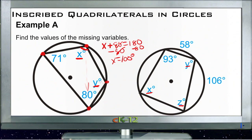And then for y, y is opposite 71, so we know that y plus 71 degrees equals 180 degrees. So we subtract 71 from both sides, and we get y equals 109 degrees.